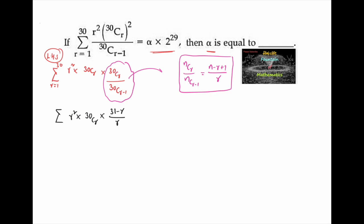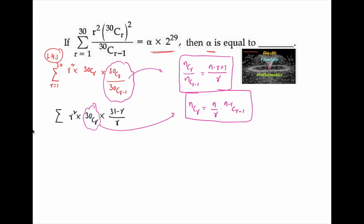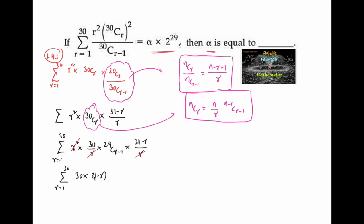We have another property: C(n,r) = (n/r) · C(n-1, r-1). Applying this property, C(30,r) becomes (30/r) · C(29, r-1). So the expression becomes summation r² · (30/r) · C(29, r-1) · (31-r)/r. Here r² cancels with r·r, giving us summation r = 1 to 30 of 30 · (31 - r) · C(29, r-1).